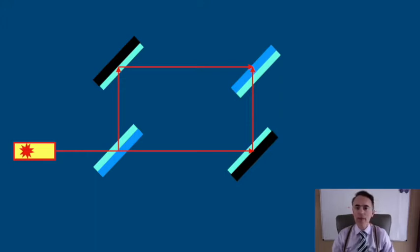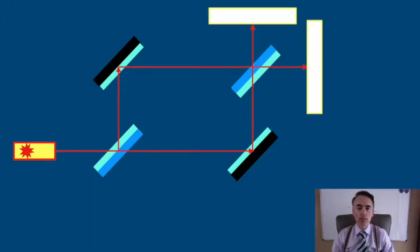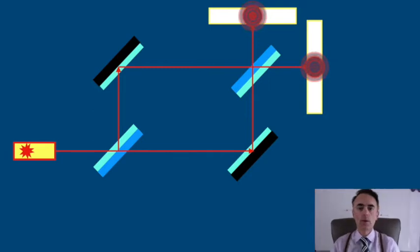Here we can have two screens or two detectors to study the interference. The reason why this interferometer has two paths is to compare the light following each path and study the differences that you can place between both paths.